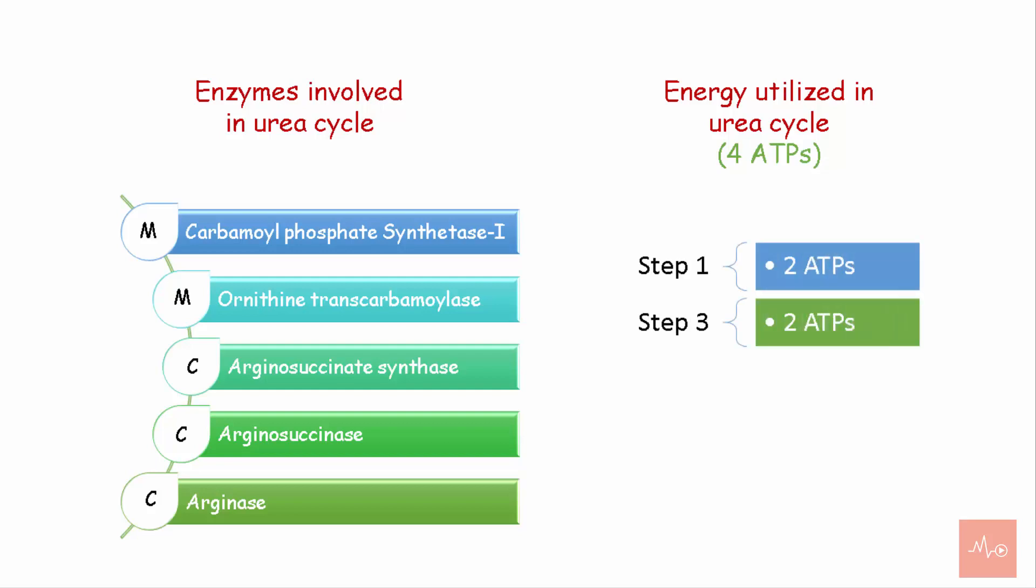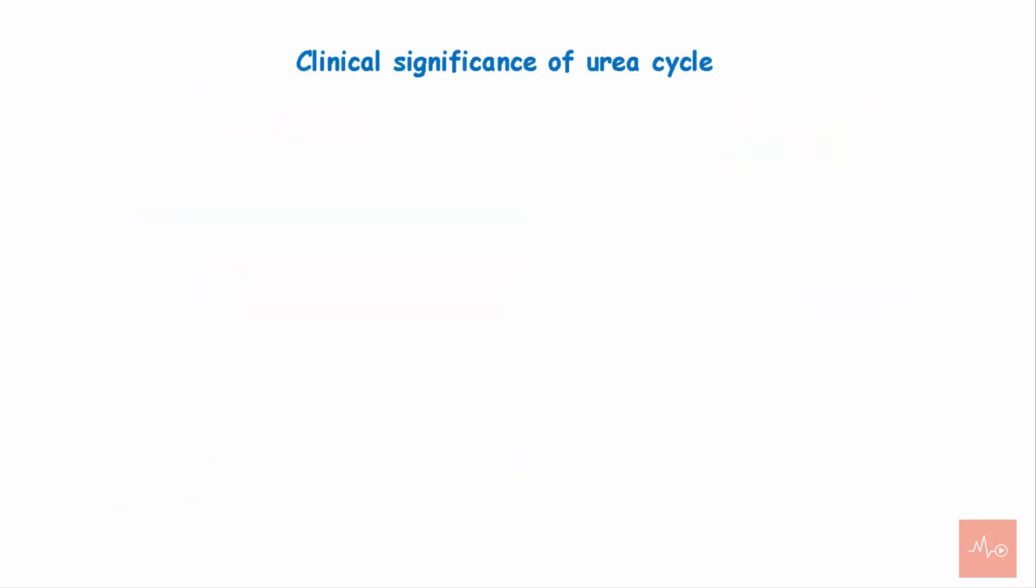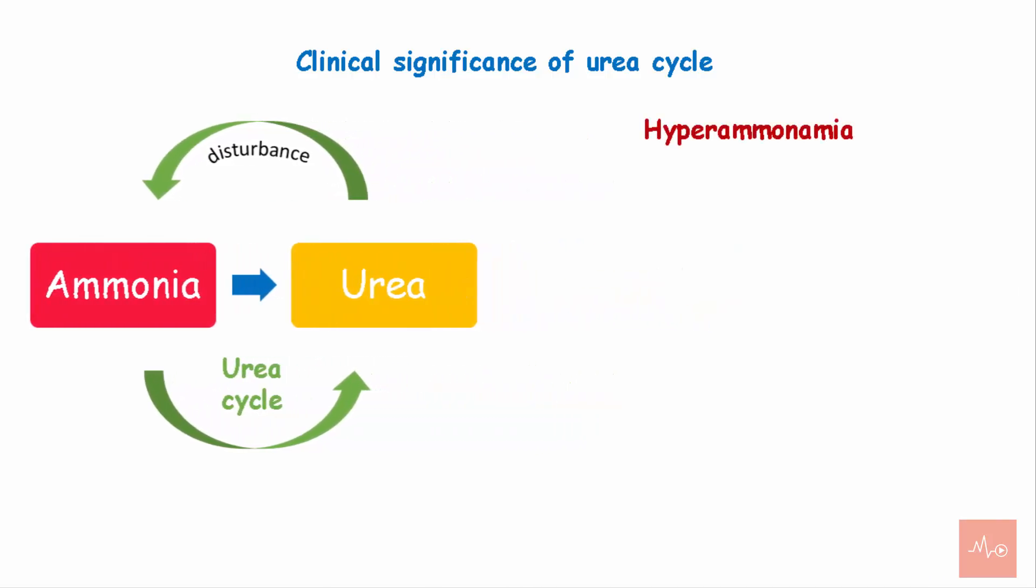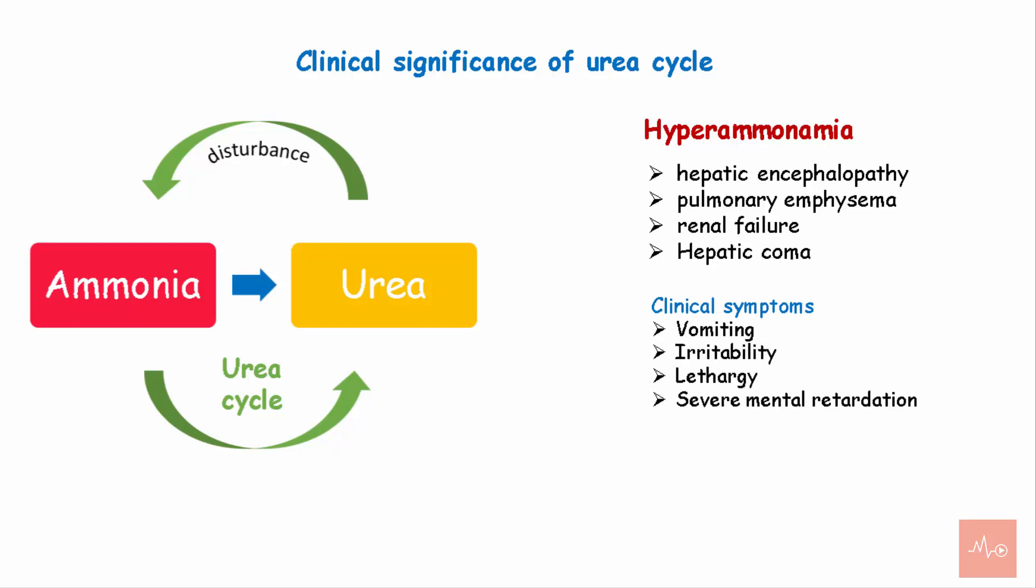Clinical significance of urea cycle: urea cycle involves the conversion of ammonia to urea. Any failure or disturbance in this cycle leads to accumulation of ammonia, and the condition is called hyperammonemia. It is seen in conditions like hepatic encephalopathy, pulmonary emphysema, renal failure, and hepatic coma. Clinical symptoms can be vomiting, irritability, lethargy, and severe mental retardation. Hyperammonemia can be managed by using low protein diet, antibiotics, and lactulose administration.